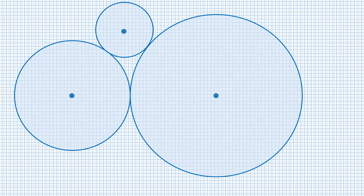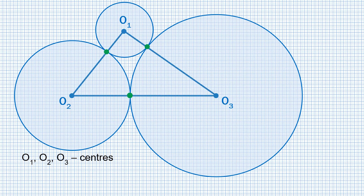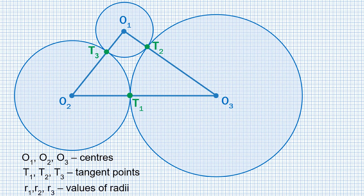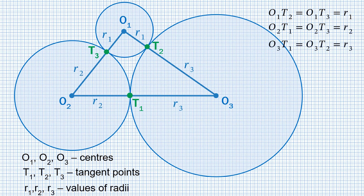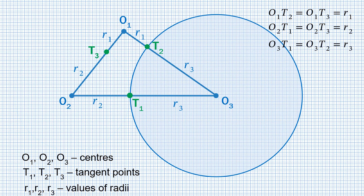We have three circles with centers at O1, O2 and O3, which are tangent to each other. The centers form a triangle O1, O2, O3. As we have seen, the tangent points T1, T2 and T3 lie on the sides of the triangle. Let R1 denote the radius of circle O1, so O1T2 equals O1T3 equals R1. Similar equations can be written for the other circles. Now we can remove the circles as they are no longer needed.